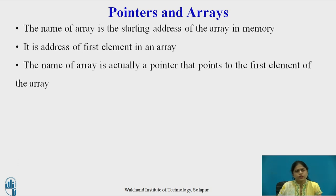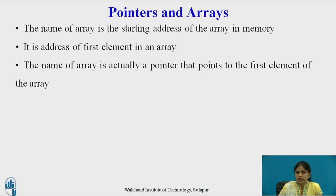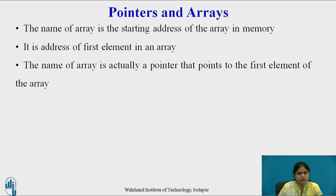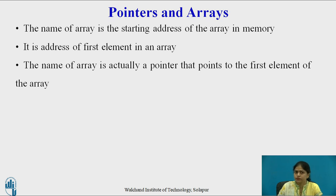We need to fix one thing in our mind about an array: the name of an array is the starting address of the array in memory — that is, the address of the first element in the array. This starting address is known as the base address. So in our example, the array starts from address 3000, meaning 3000 is the base address. We can conclude that the name of the array is actually a pointer that points to the first element of the array.